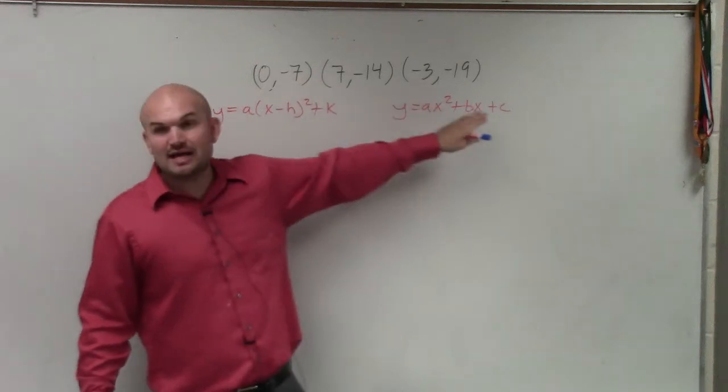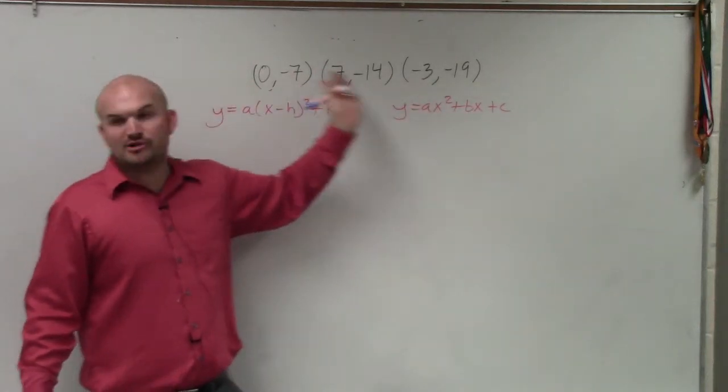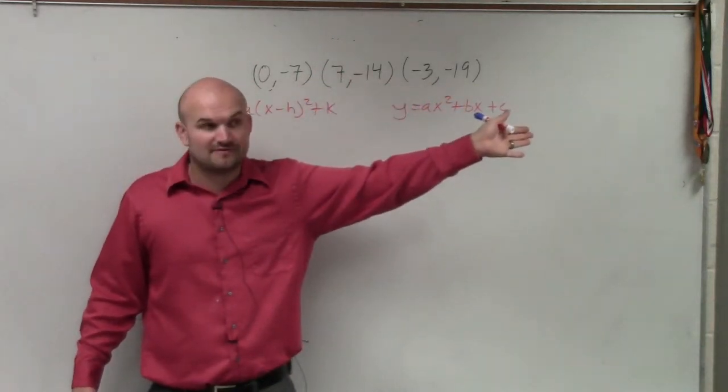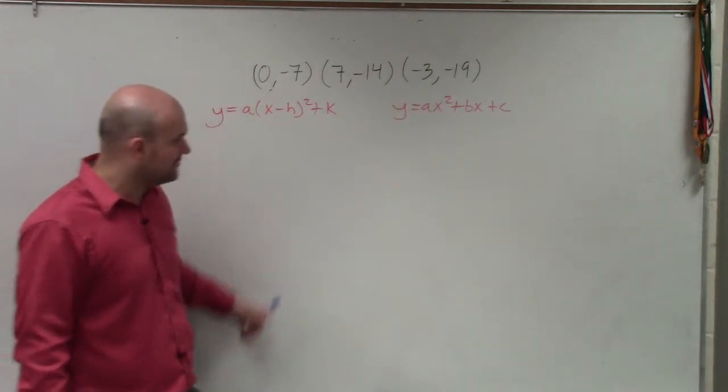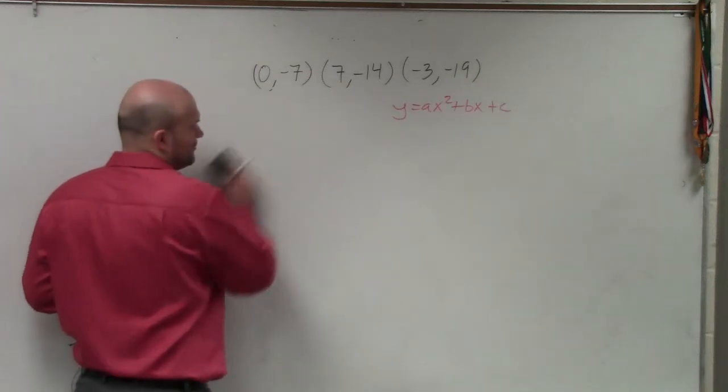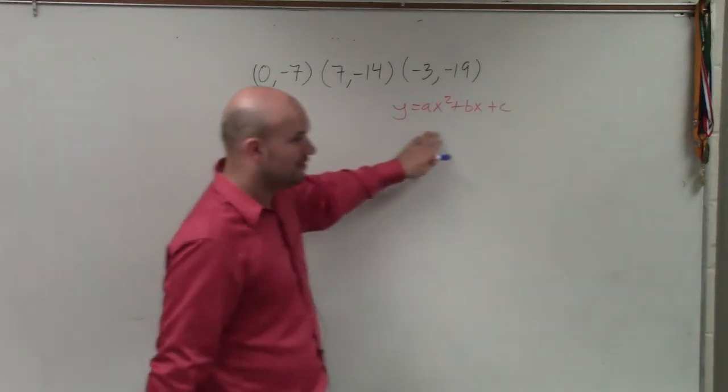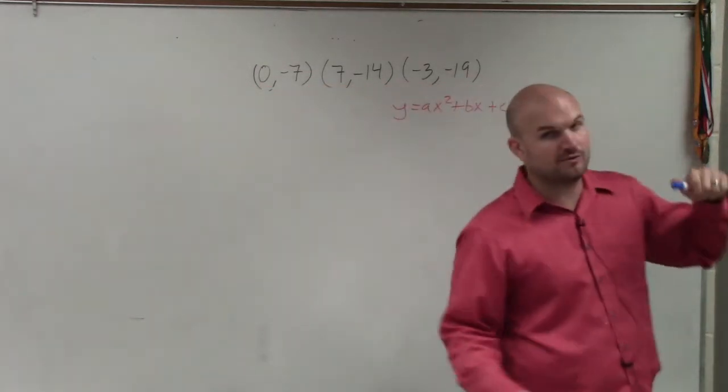In here, they don't tell us which one's the vertex. They just say these three points lie on the line, on the graph. So since I don't know what h and k is going to be for this one, I think this value is going to be a little bit hard for me to use. So I'm going to go ahead and go through this one, this equation.